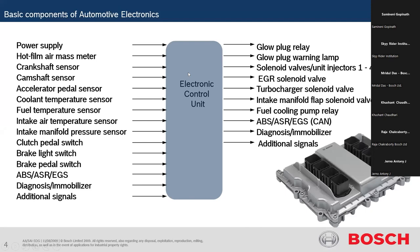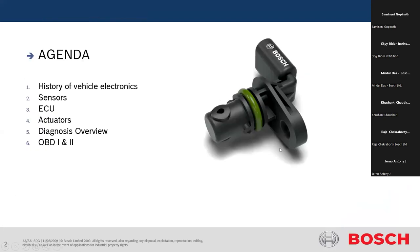What is the main purpose and basic components of an engine management system or automotive electronics? It is basically a combination of three things: first is your sensors, second is your Electronic Control Unit, and third is your actuators. Our agenda comprises all of these — sensors, ECU, and actuators — where ECU stands for Electronic Control Unit.